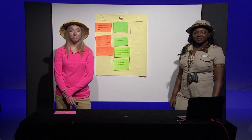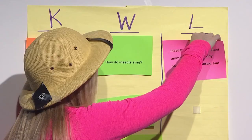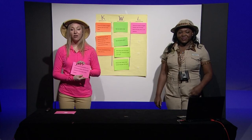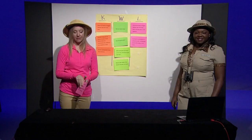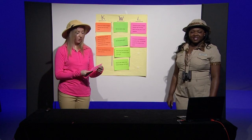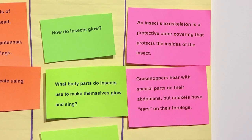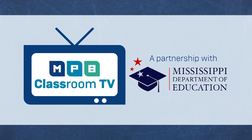Let's review what we learned and add it to our chart. Today we learned that insects are small, six-legged animals with three body parts — the head, the thorax, and the abdomen. We also learned that an insect's exoskeleton is a protective outer covering. And we learned that grasshoppers hear with special parts on their abdomens, but crickets have ears on their forelegs. Thank you for participating in our lesson. All rights and credits belong to Core Knowledge Language Arts. Tell someone at home about all the insects that glow and sing. Bye!